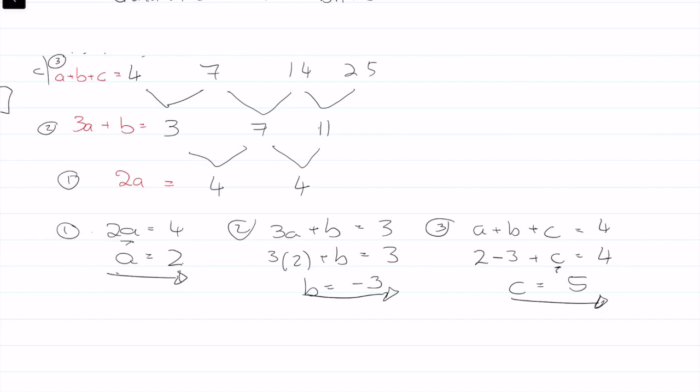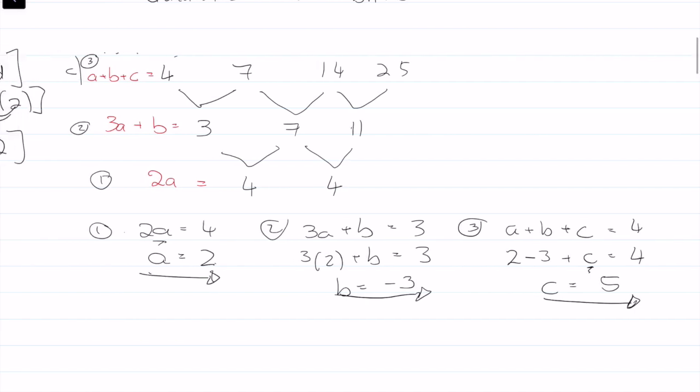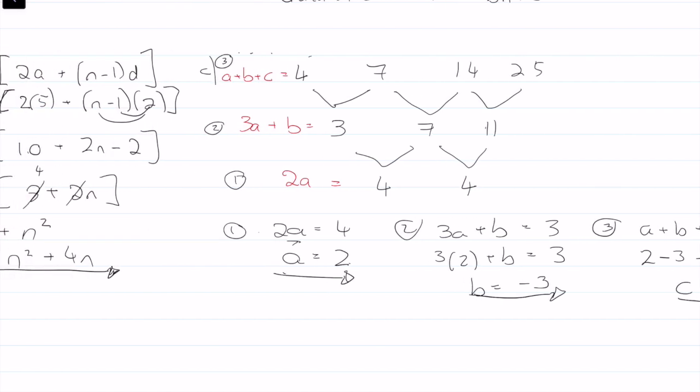So now we can say that the equation or the expression TN, which is what we're looking for, is equal to, following the format, AN squared, so that's 2N squared, plus B, which is minus 3N, plus C, which is plus 5.